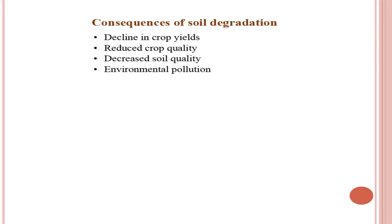The consequences of soil degradation — whether physical, chemical, biological, or erosion — are: decline in crop yields (under waterlogging or salt affected conditions yields are low), reduced crop quality, decreased soil quality, and environmental pollution.